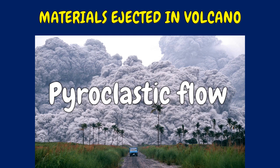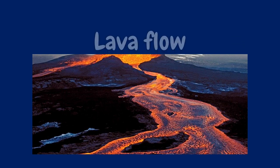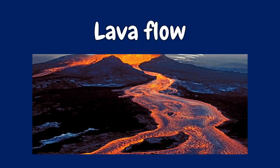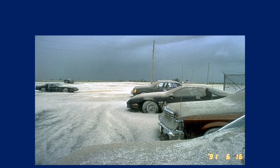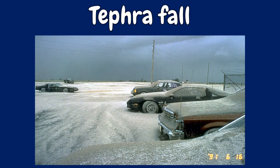Pyroclastic flows form in various ways. Lava flows are streams of molten rock that pour or ooze from an erupting vent, and lava is erupted during either non-explosive activity or explosive lava fountains. The term tephra defines all fragments of rock ejected into the air by an erupting volcano. Most tephra falls back onto the slopes of the volcano, but billions of smaller and lighter pieces — less than 2mm — termed ash, are carried by winds for thousands of miles.